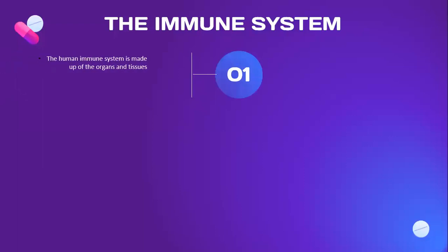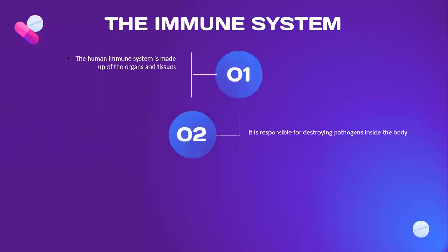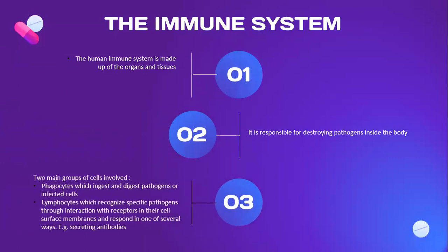The immune system. The human immune system is made up of organs and tissue, and it is responsible for destroying pathogens inside the body. The two main groups of cells involved in the immune system are phagocytes and lymphocytes. Phagocytes ingest and digest pathogens or infected cells. Lymphocytes recognize specific pathogens through interaction with receptors in their cell surface membrane and respond in one of several ways, for example by secreting antibodies.